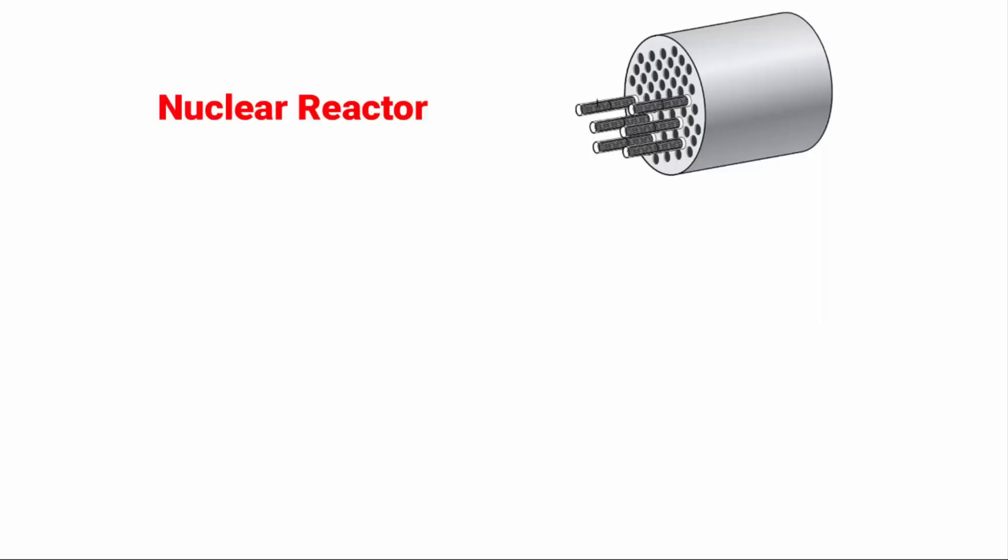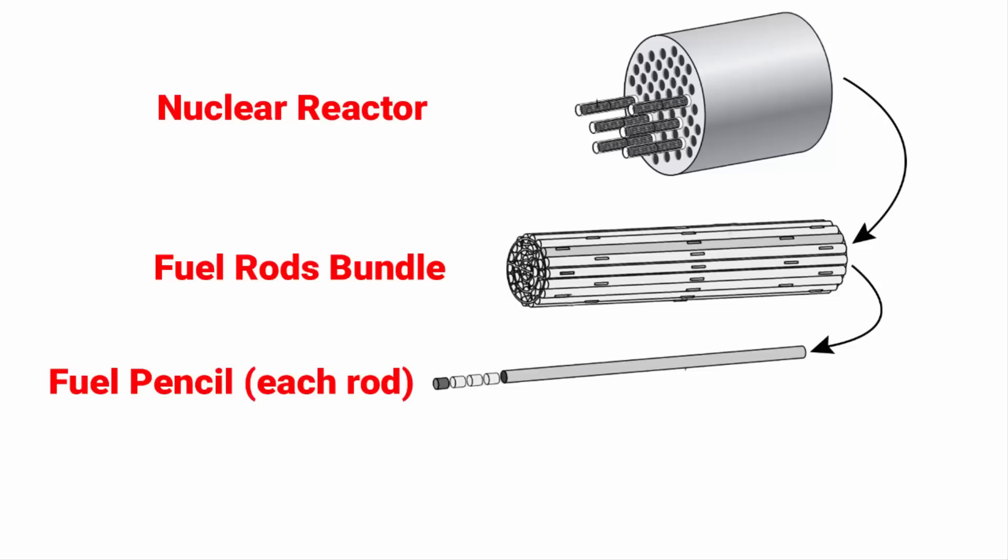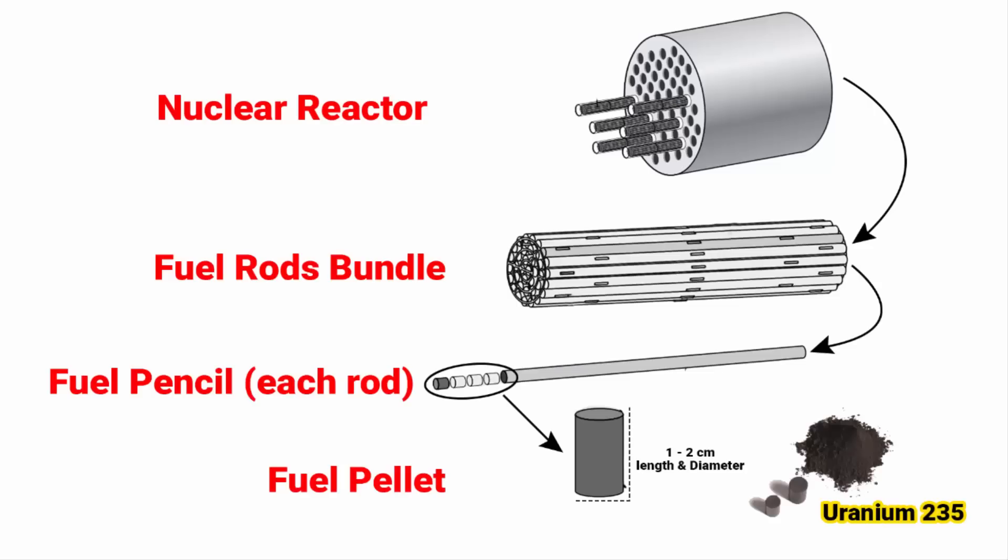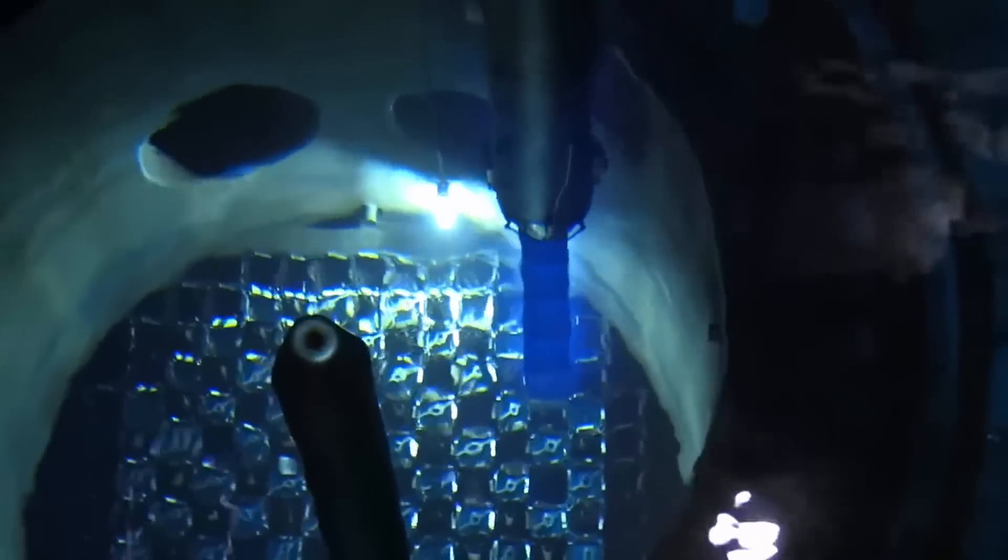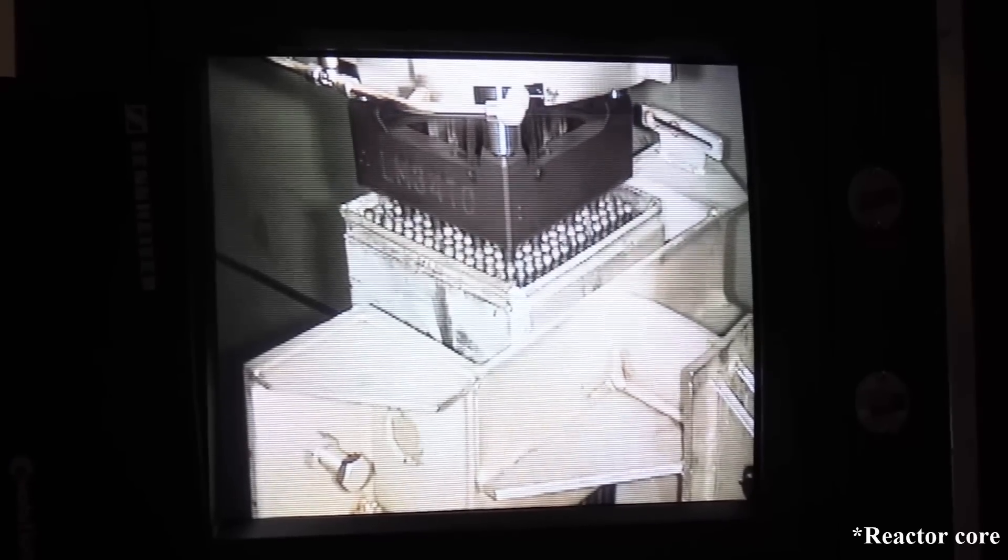Inside these fuel rods, a special material called Enriched Uranium-235 which is stored in small ceramic pellets is tightly packed. Now what they do is, they take fuel rods and place them within the reactor core in a grid sort of system.